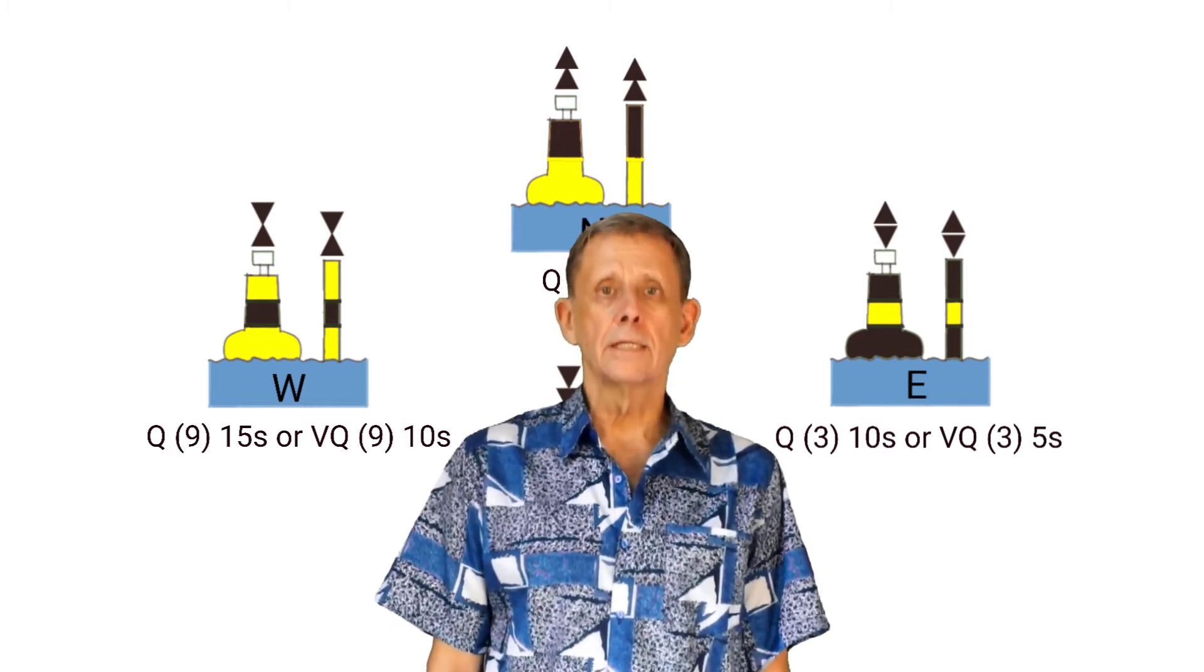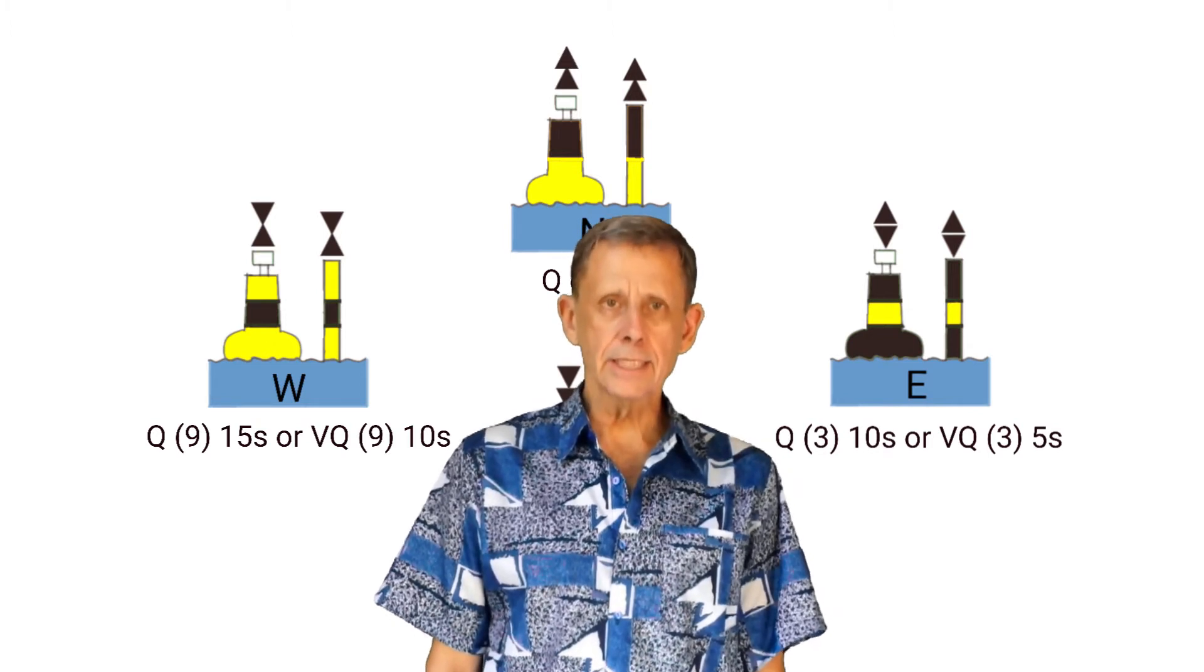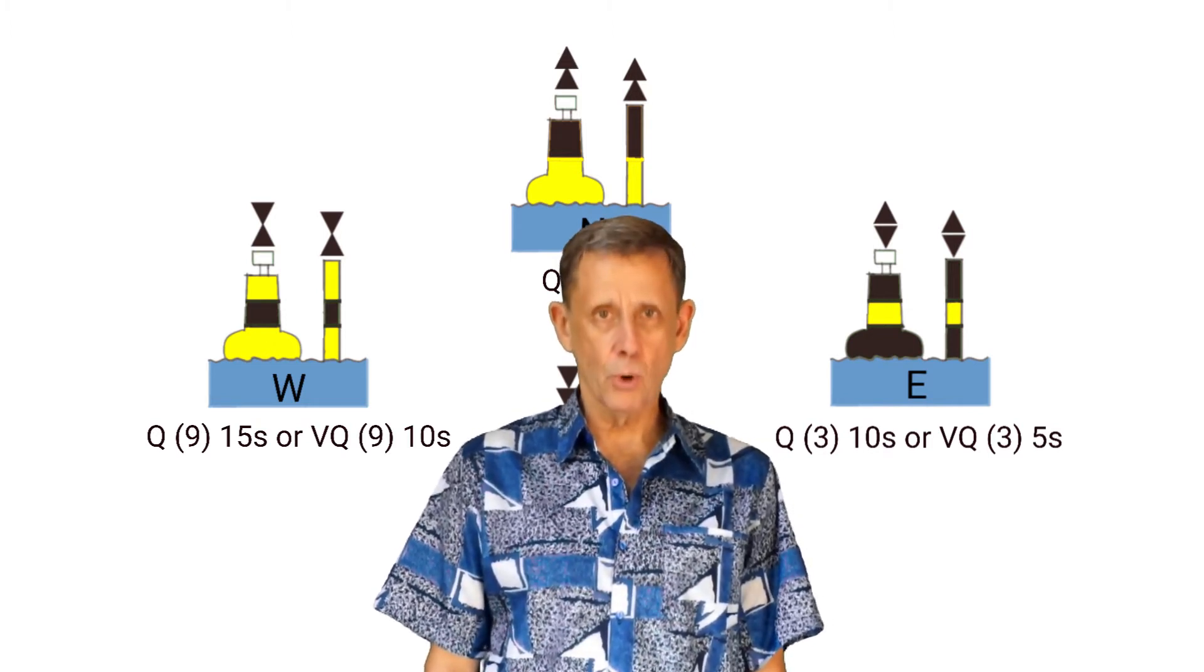In the last lesson, we looked at light characteristics used for navigation beacons. In this lesson, we will look at cardinal beacons and special buoys.